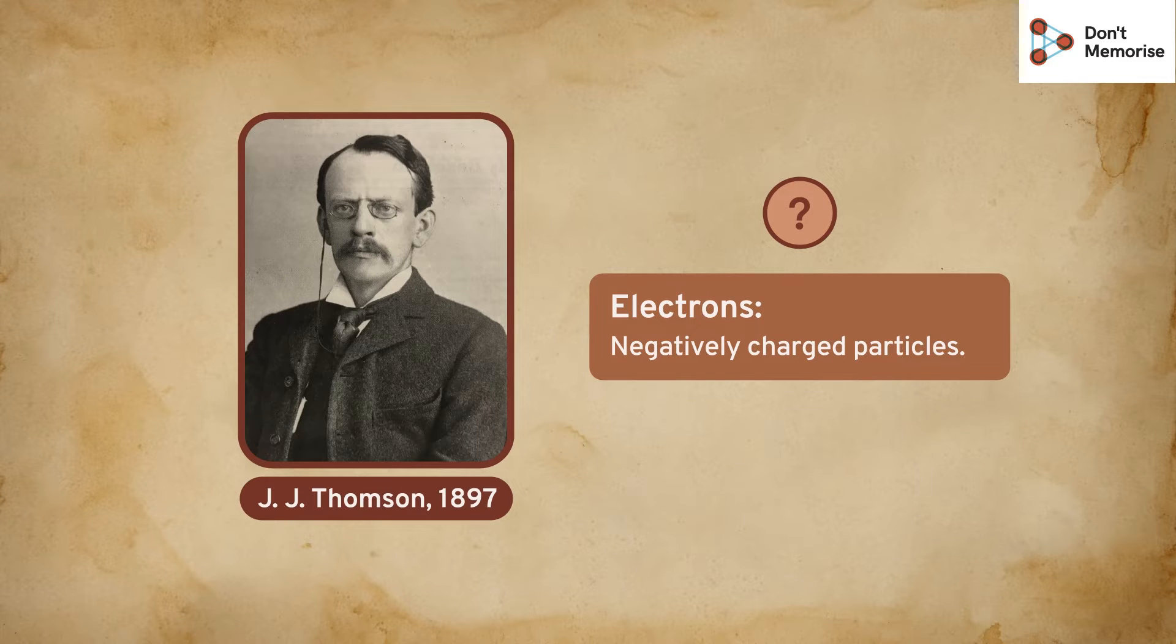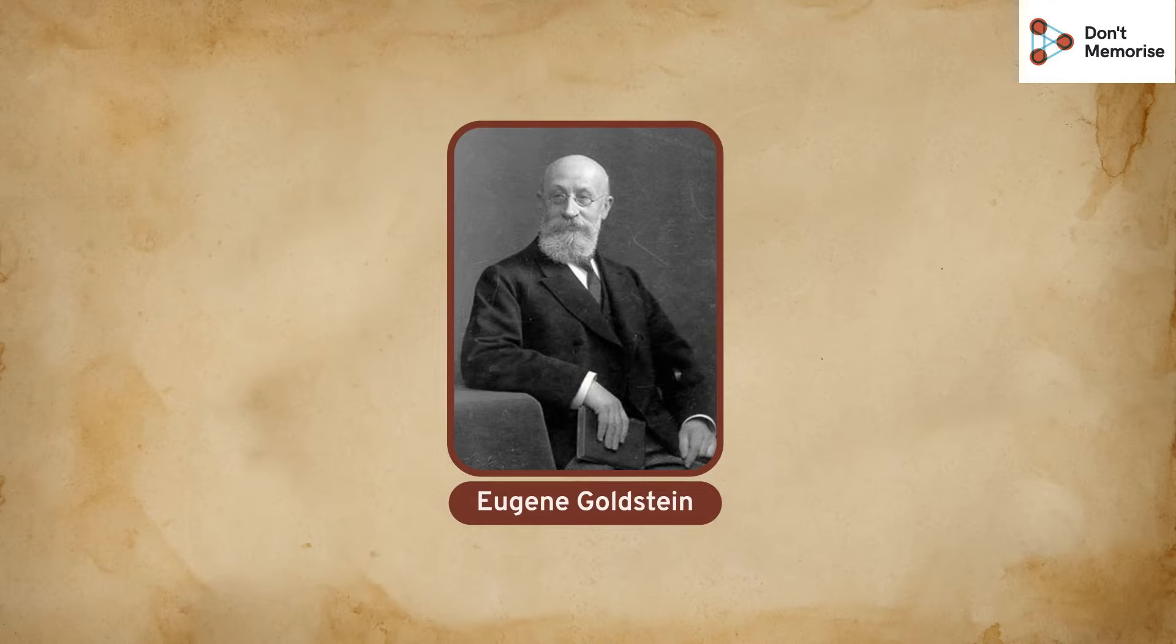This confusion was cleared by the results of some experiments performed by a German physicist, Eugene Goldstein, much before J.J. Thomson. In 1886, Eugene Goldstein performed an experiment using a discharge tube.